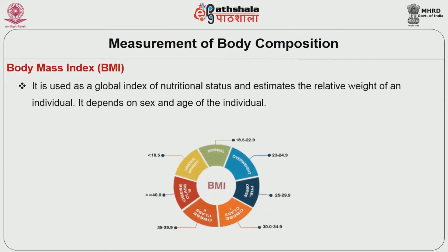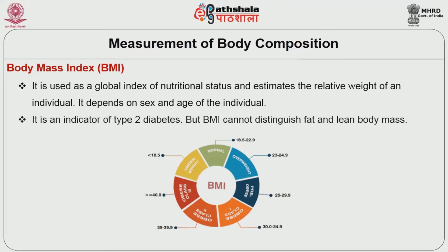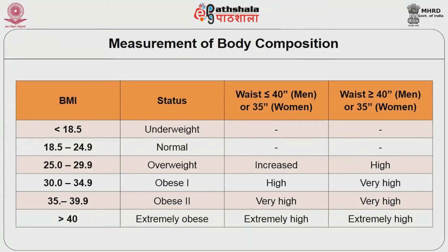Body Mass Index is used as a global index of nutritional status and estimates the relative weight of an individual. It depends on sex and age of the individual. BMI is an indicator of type 2 diabetes but BMI cannot distinguish fat and lean body mass. The table below gives the BMI, its status and its relation with waist circumference.